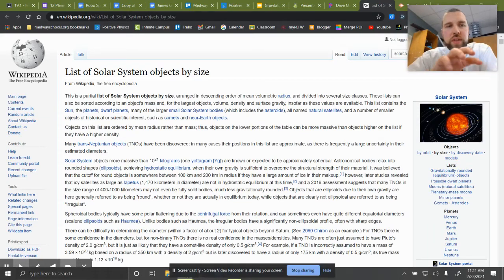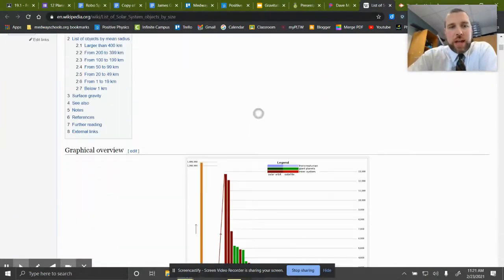Okay, just want to give a quick tour of the site we're going to be using to figure out how much do you weigh where? So it's a Wikipedia article, lists of solar system objects by size.